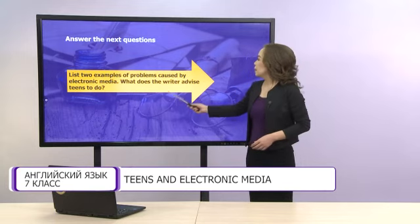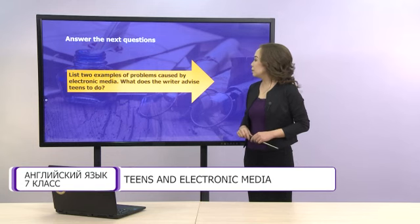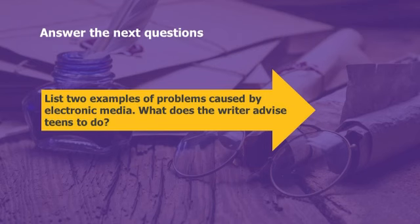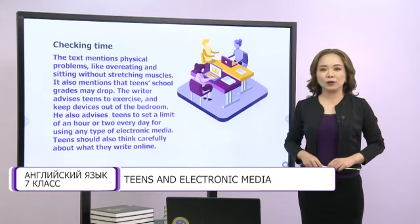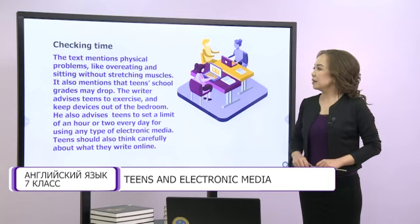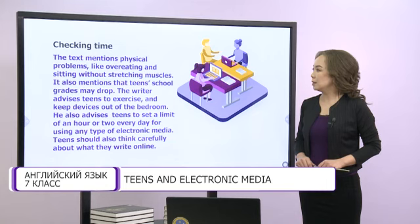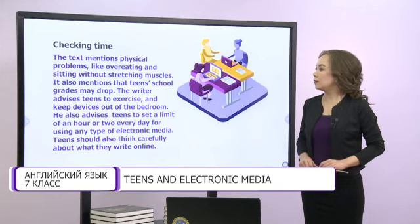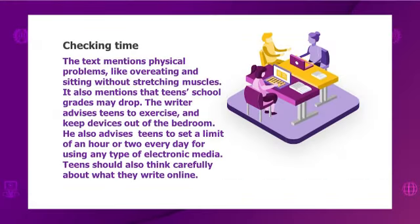Now, try to answer these two examples of problems caused by electronic media. What does the writer advise teens to do? If you are ready, it's checking time. The text mentions physical problems like overeating and sitting without stretching muscles. It also mentions that teens' school grades may drop. The writer advises teens to exercise and keep devices out of the bedroom. He also advises teens to set a limit of an hour or two every day for using any type of electronic media. Teens should also think carefully about what they write online.